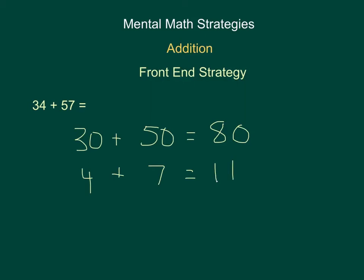Now when we look at this question, 80 plus 11 is much easier to add in our head. 80 plus 11 is like saying 80 plus 10 plus 1. 80 plus 10 is 90, plus 1 is 91. Therefore the answer to 34 plus 57 is 91.